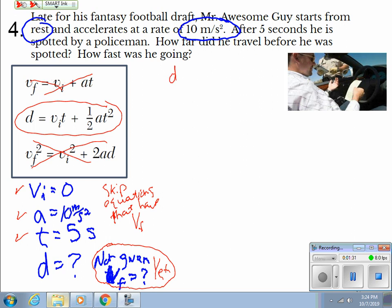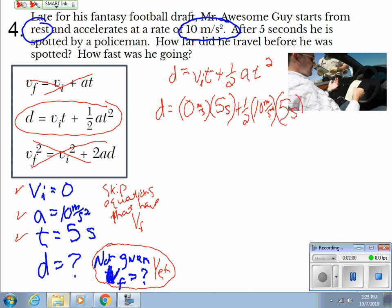All right. So let's put our equation up and substitute in. My D equals V initial T plus one half A T squared. Put in all my numbers. My D equals 0 times 5 seconds plus one half times 10 times 5 seconds, and you've got to square it. Don't forget to square it. That is really crucial when you're first learning how to do things.